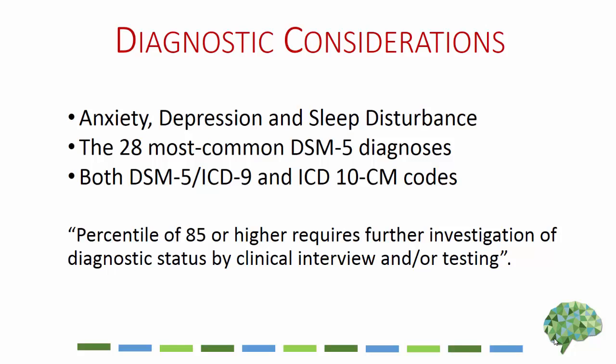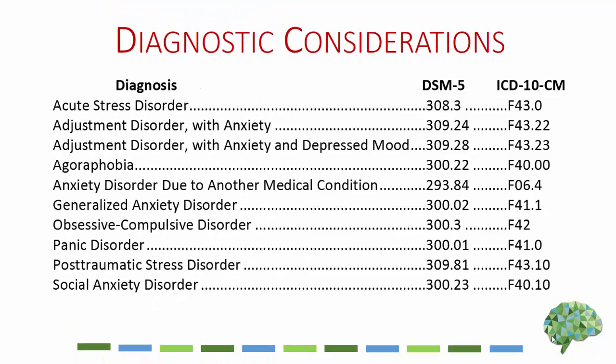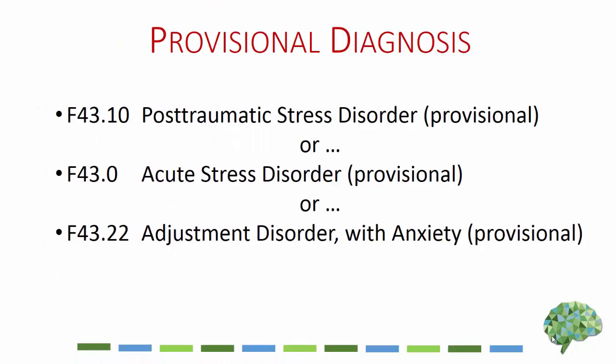Here is the section on anxiety in the diagnostic considerations page. We have 10 different anxiety diagnoses — these are the 10 most common that a counselor is likely to run into, though there are others of course. There are two strategies to use when working on diagnosis. The first is to come up with a provisional diagnosis.